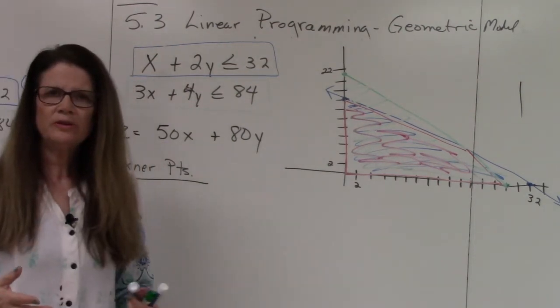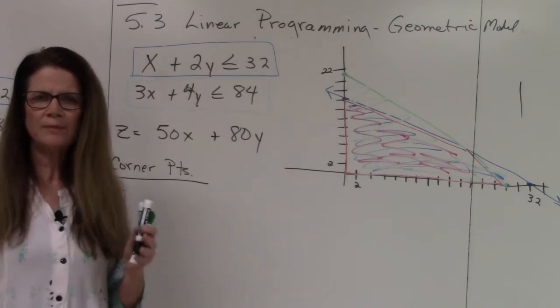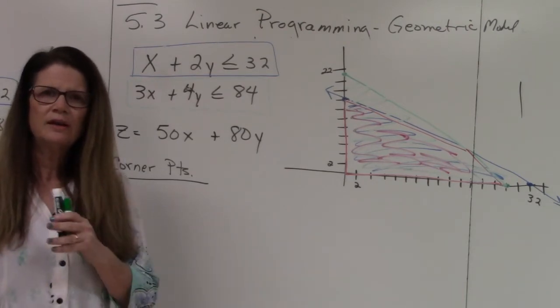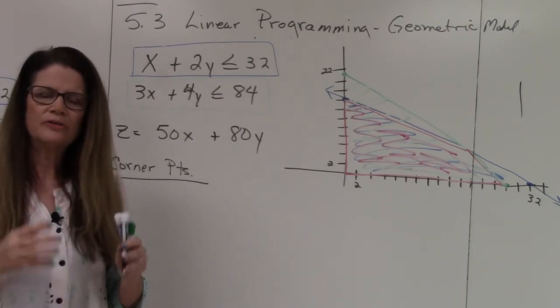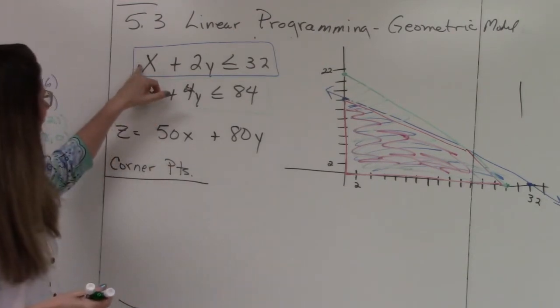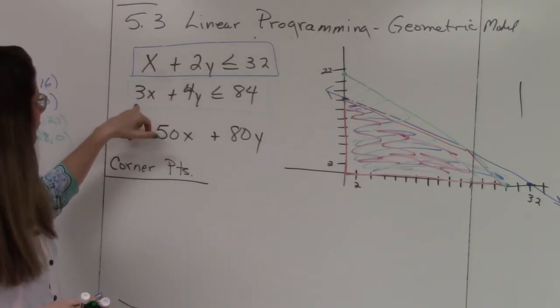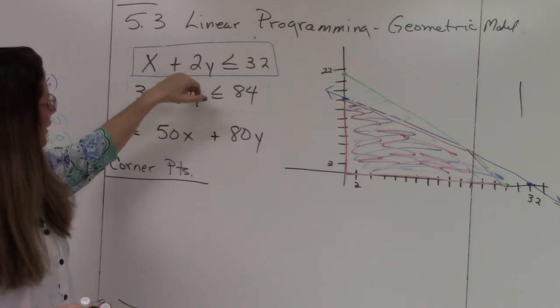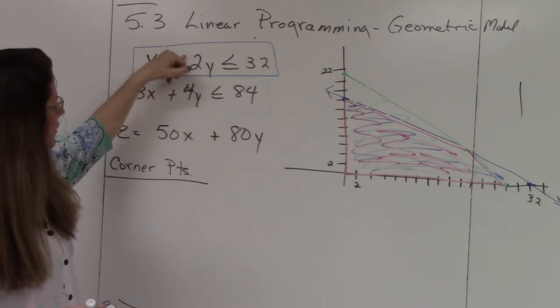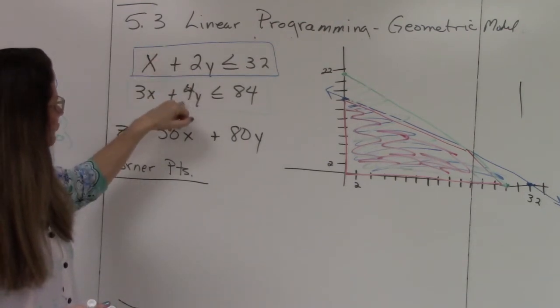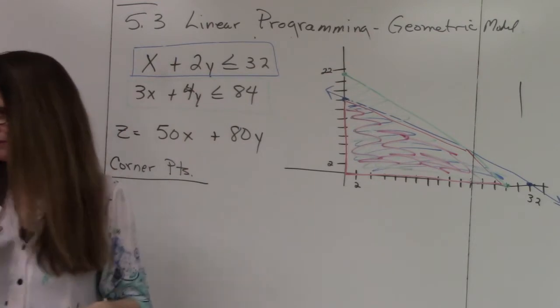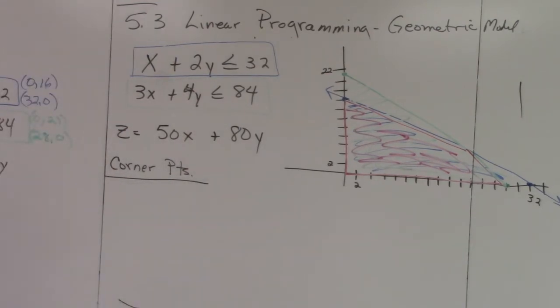Okay, so we're going to continue with this particular problem. We have two types of tents. We have standard tent and expedition tent. The standard tent takes one hour of cutting and three hours of assembly. The expedition tent takes two hours of cutting and four hours of assembly.